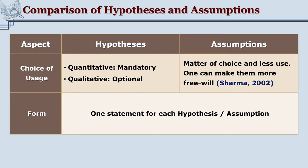Whether the researcher has the choice of using either hypothesis or assumptions — if the researcher is conducting a quantitative study, then the researcher does not have any choice; the researcher has to write the hypothesis for every quantitative study. In case of qualitative studies, writing the hypothesis would be optional, depending on the choice of the researcher. In the case of assumptions, it is completely a choice of the researcher whether assumptions are to be written, and if yes, how many assumptions are required for that particular research.